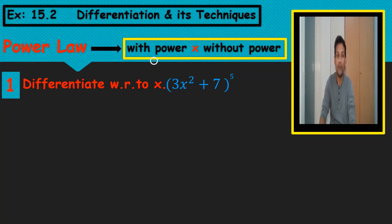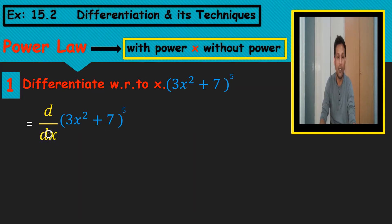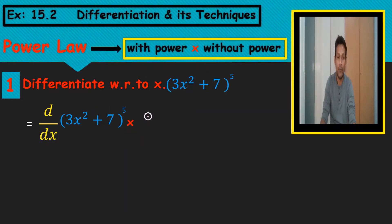So when we want to differentiate this with respect to x, I will write d/dx of the whole value with power, multiplied by d/dx without power 5. The differential with power is multiplied times the differential without power.